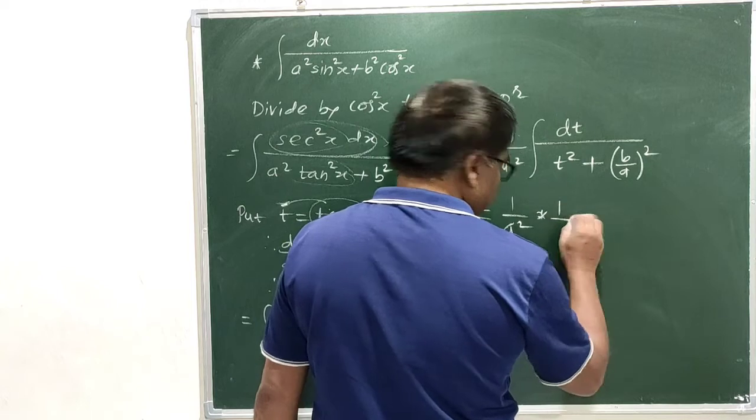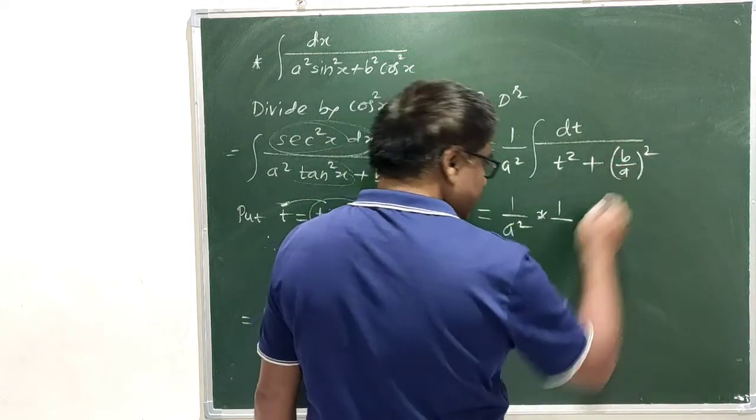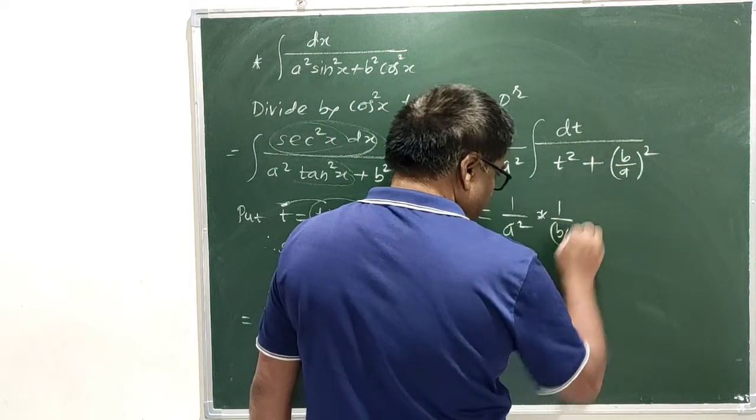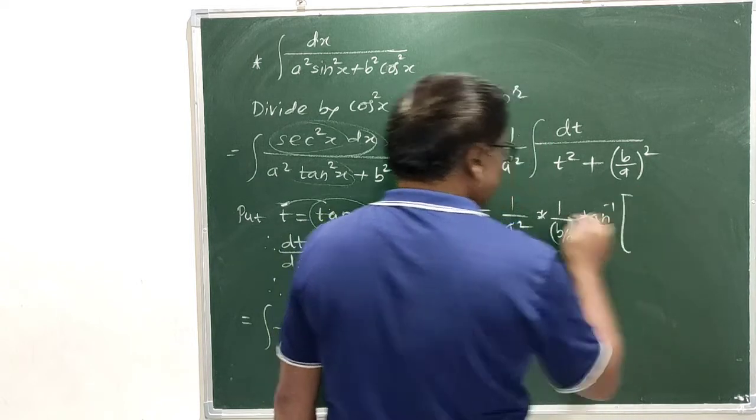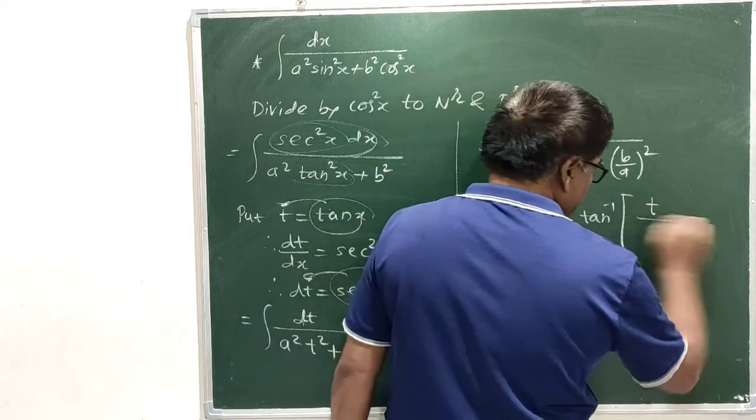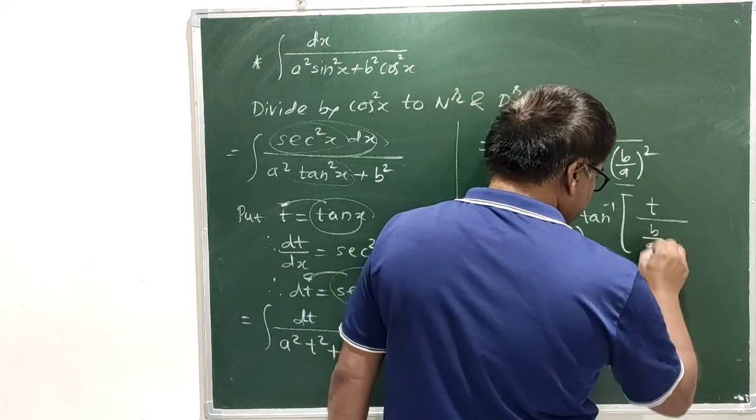Now, this is equal to 1 by a, value of a is here b by a, into tan inverse x by a. Tan inverse, value of x is t and value of a is b by a.